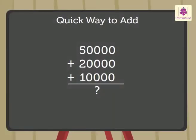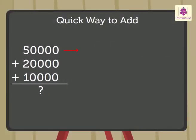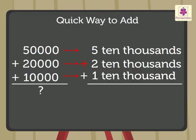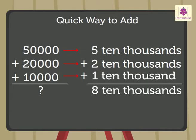Why not? Here, I have to add 5 ten thousands plus 2 ten thousands plus 1 ten thousand. So, 5 plus 2 plus 1 equals 8, which means 8 ten thousands. That is 80000.